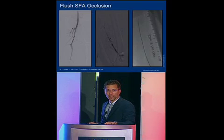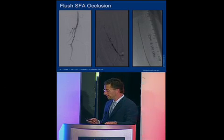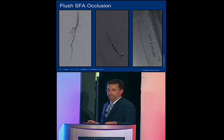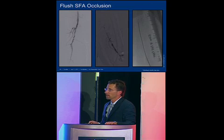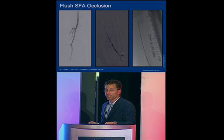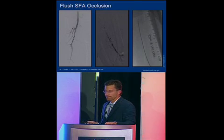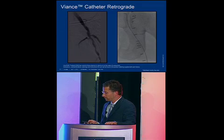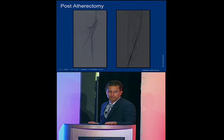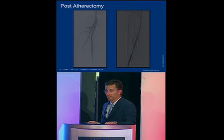Another case: a patient with a flush occlusion off the common femoral — very difficult because you have no idea where the SFA starts. We chose popliteal access, inserting a support catheter directly through the skin into the popliteal artery — no sheath — just an 035 Trailblazer inserted through the popliteal, with the Vianz coming through the Trailblazer. Once at the common femoral, the Vianz popped right in, the wire went up, and after atherectomy we got a great result — treatment of a long occlusion that was occluded ostially off the common femoral.